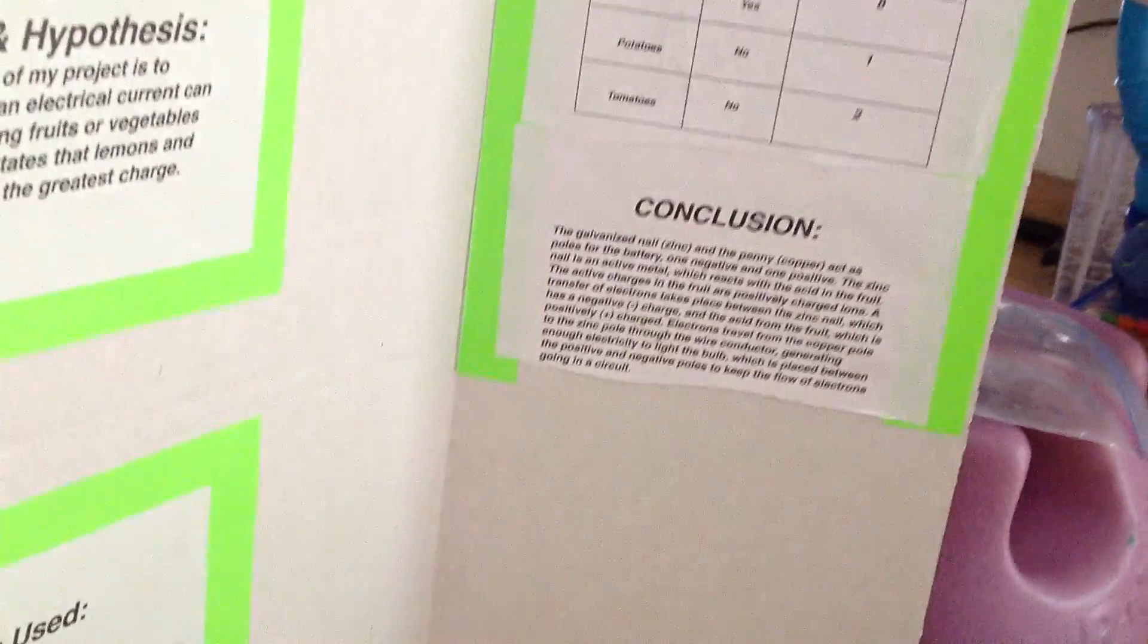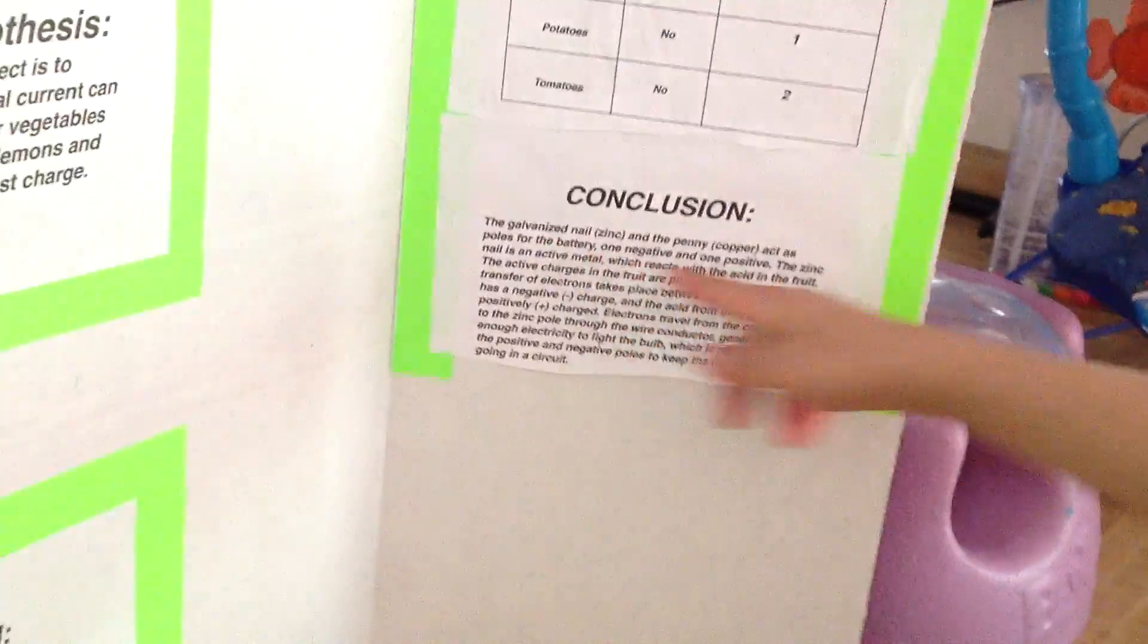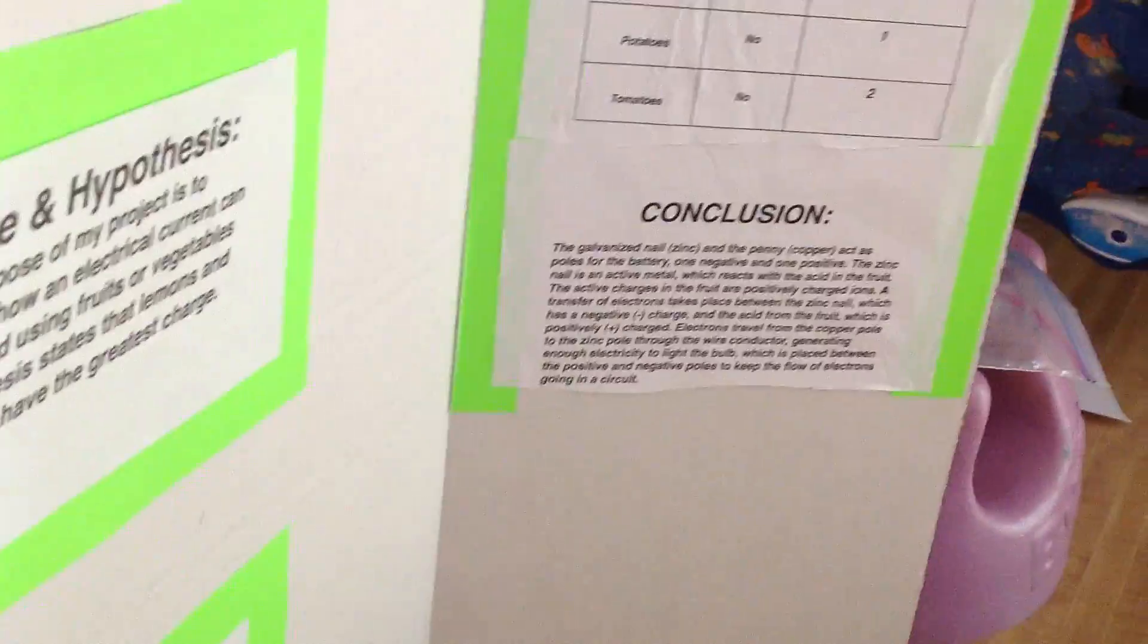That's the science project, and now we're going to read the conclusion. The galvanized nail, which is zinc, and the copper penny act as poles for battery. One negative and one positive. The zinc nail is an active metal, which reacts to the acid in the fruit.